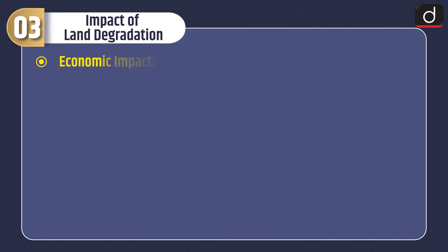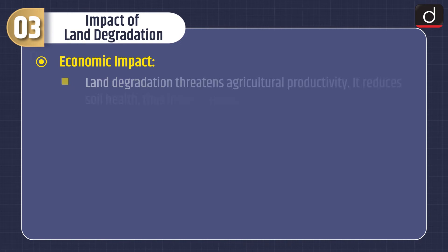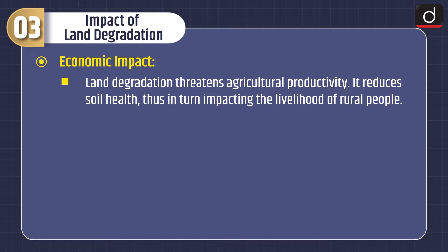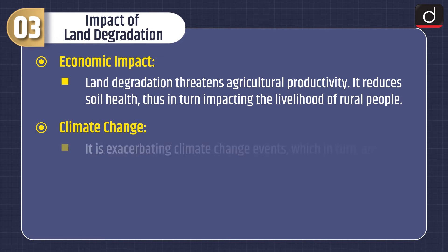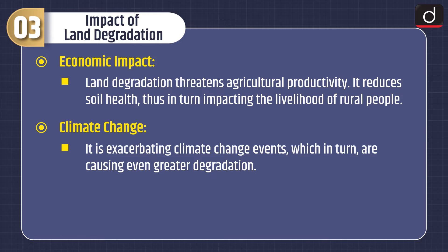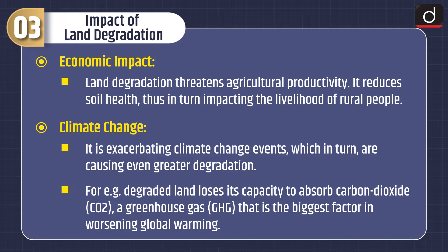Now let's look at the impacts of land degradation. First is economic impact: land degradation threatens agricultural productivity, reduces soil health, and in turn impacts the livelihood of rural people. Second is climate change — land degradation is exacerbating climate change events which in turn cause even greater degradation. For example, degraded land loses its capacity to absorb carbon dioxide, a greenhouse gas that is the biggest factor in worsening global warming.